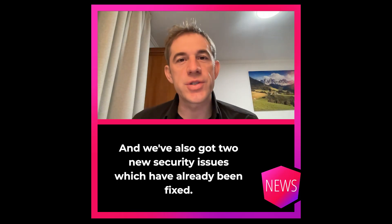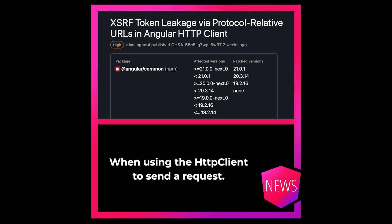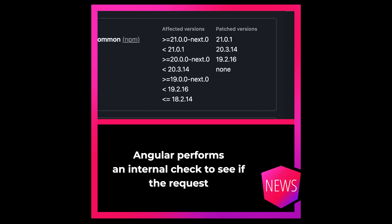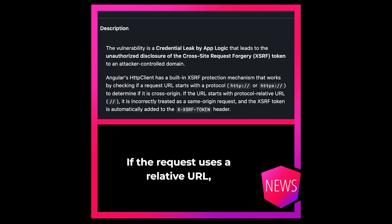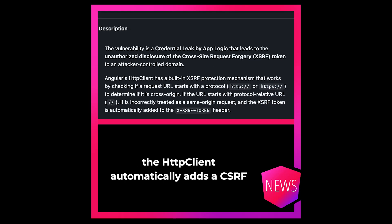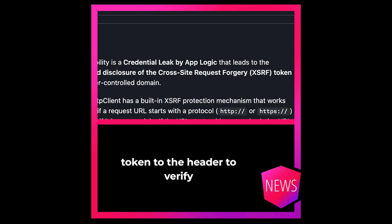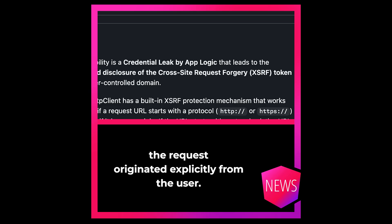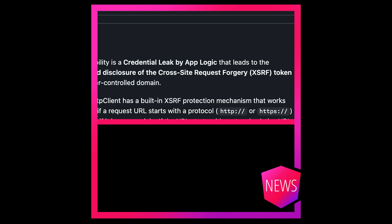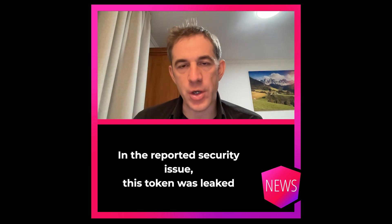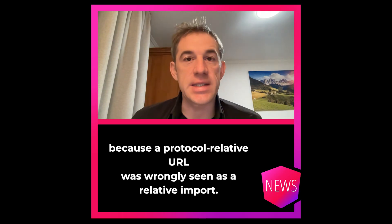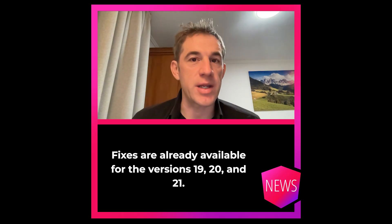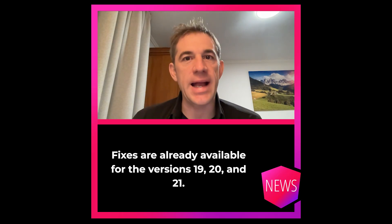Two new security issues were reported, both already fixed. When using the HTTP client, Angular checks whether a request targets the same origin. If a relative URL is used, Angular automatically adds a CSRF token to the header. In the reported issue, this token was leaked because a protocol-relative URL was wrongly treated as a relative input. Fixes are available for versions 19, 20, and 21.